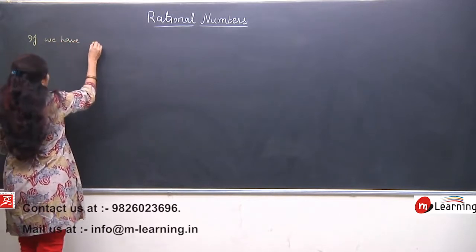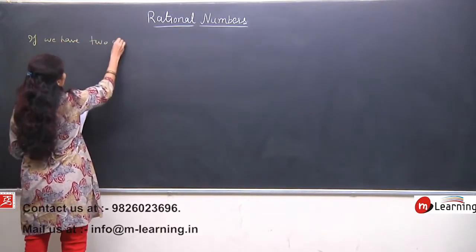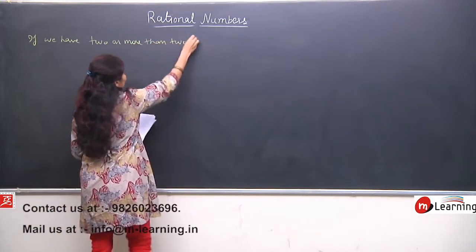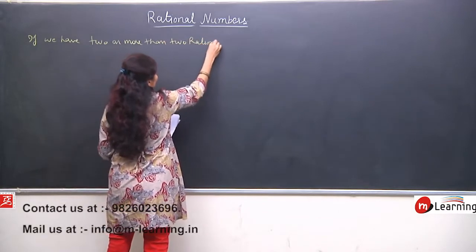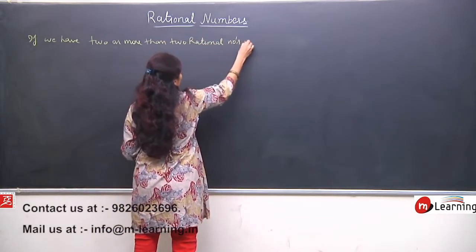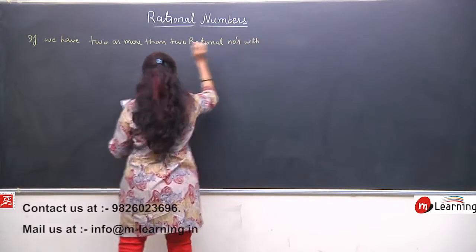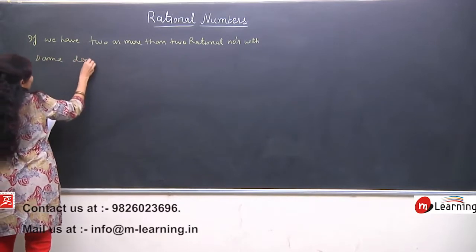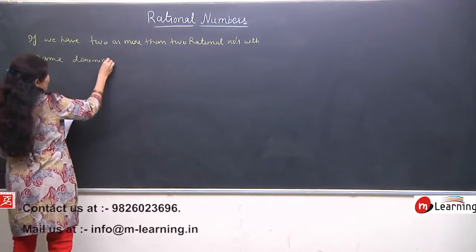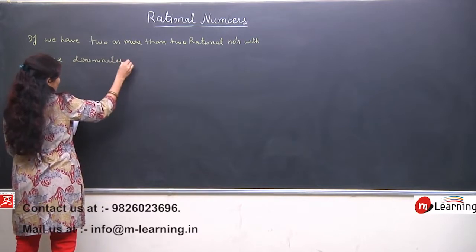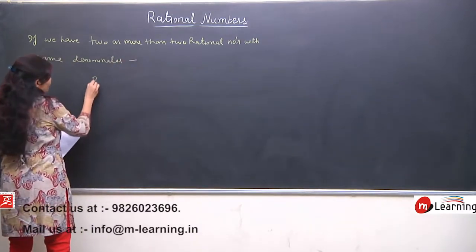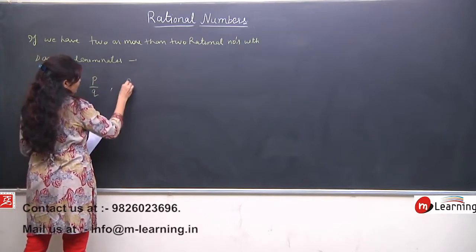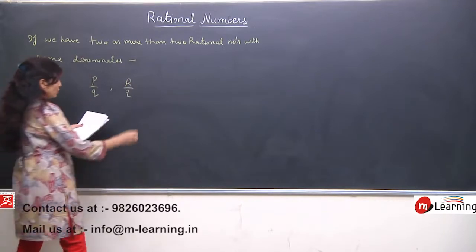If we have 2 or more than 2 rational numbers with same denominator, this property is very easy because the LCM is quite simple. So first rational number is P upon Q and second rational number is for example R upon Q, then what I will do?